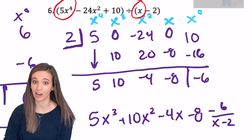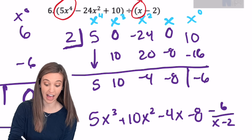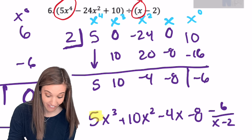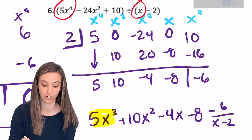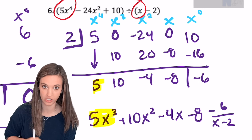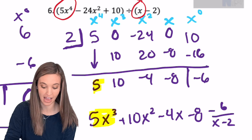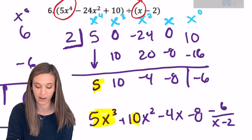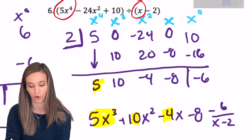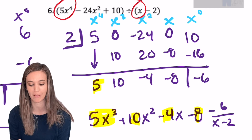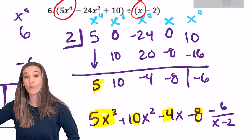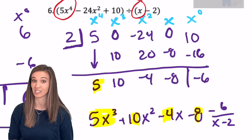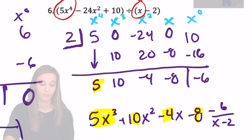Let's check your final answer. Make sure you've actually written out 5x to the 3rd — not just a 5. Then I have my plus 10x squared, my minus 4x, and then my minus 8, with my remainder of negative 6 divided by x minus 2.